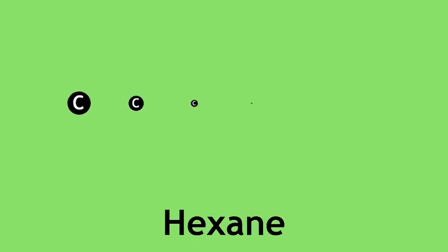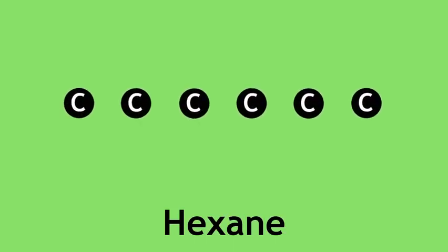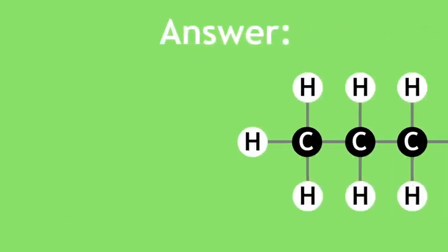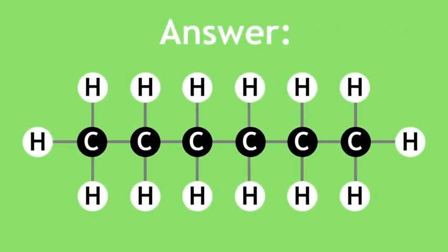Pause this video now and try to draw the structure of hexane. Hexane has six carbon atoms. Here is the structure of hexane. Compare it to the structure you drew. Did you get it right?